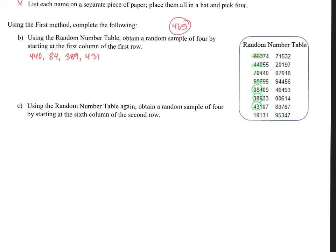Hopefully you paused the video and tried it by yourself. Let's see. This says, using the random number table again, obtain a random sample of four by starting at the sixth column of the second row. So let's see. One, two, three, four, five, six. Second row. One, two. Alright, so we're going to start at two.